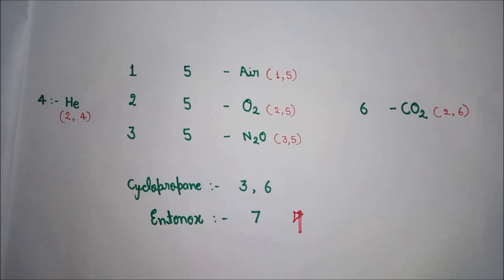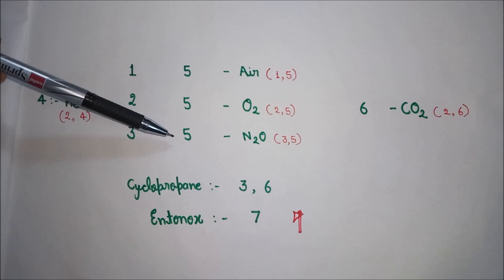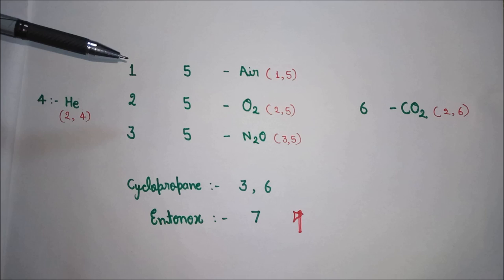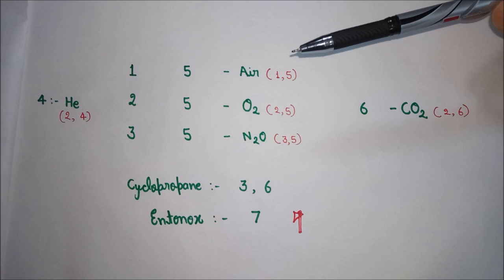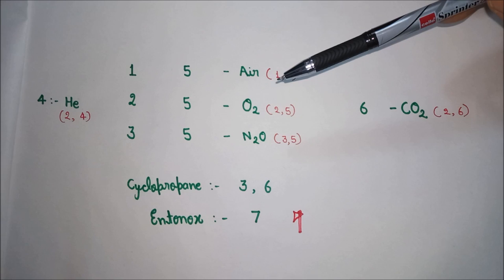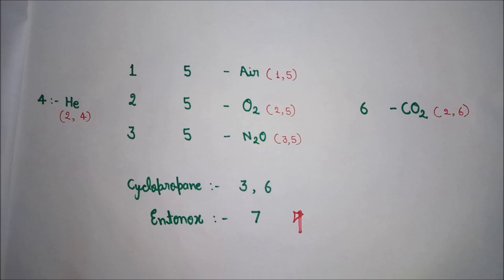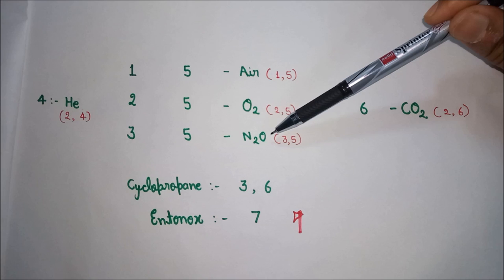To build the table, first write the numbers 1, 2, 3. In the second row, write 5, 5, 5 in front of each. Now, thinking about the atmosphere: first is Air (1,5). When we think of the composition of air, oxygen is most important, so Oxygen gets the second number (2,5). Further investigating, Nitrogen — combined as Nitrous Oxide — is the next important component, so Nitrous Oxide is third (3,5).